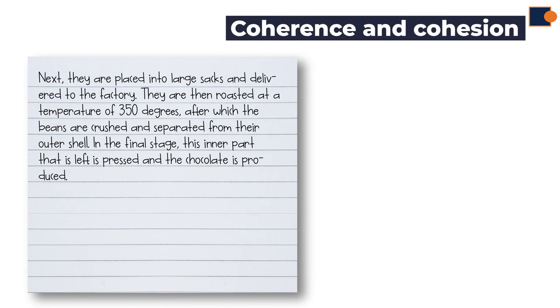Coherence and cohesion criteria is met in the sample by focusing separately on the factory process as another paragraph. In addition, linking words like 'next,' 'then,' 'after,' and 'in the final stage' are used.